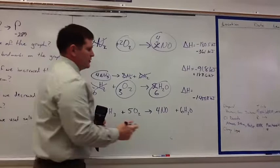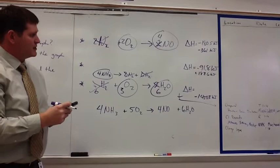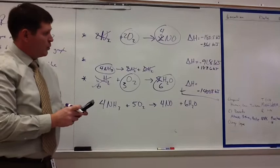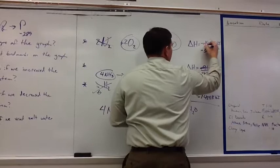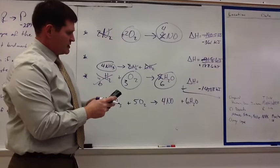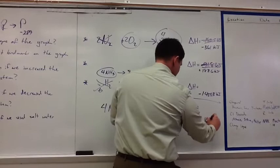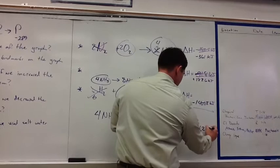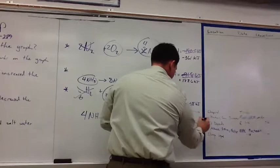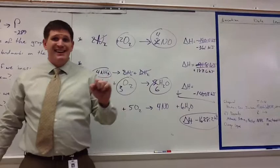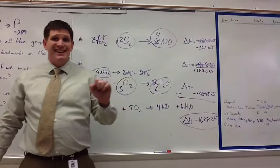Now all we have to do is sum up our enthalpies and we will have an answer. So we have negative 361 plus 183.6 plus negative 1450.8 and that gives us a delta H of negative 1628.2 kilojoules. Now what type of reaction do we have. It is a negative delta H. So we have an exothermic reaction. Heat is being given off. That is something that we will definitely be using later on. So hopefully this helps. I'll see you tomorrow.